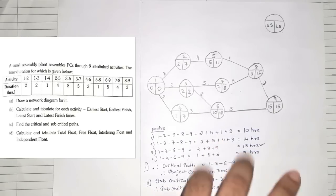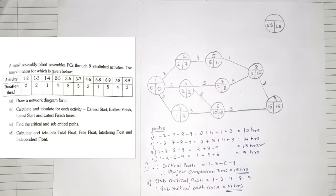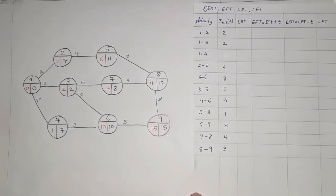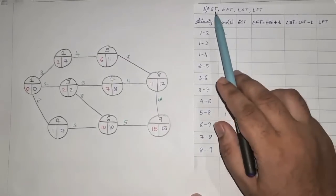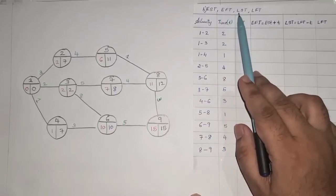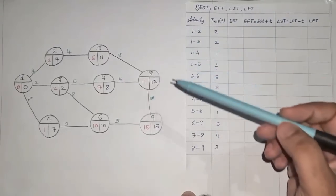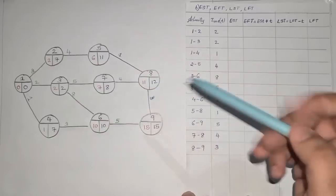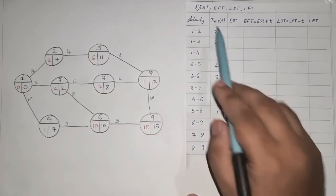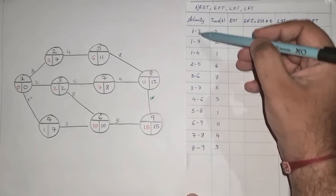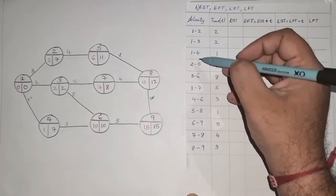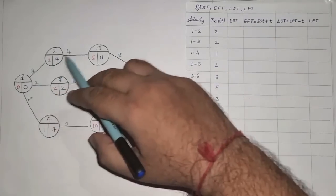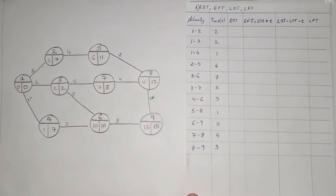Now we use these network values to fill a table for each activity. For earliest start time (EST), we look at the first value of the starting node of each activity. For activities starting at node 1: EST=0. For activity 2→5: EST=2. For activities from node 3: EST=2. For activity 4→6: EST=1. For activity 5→8: EST=6. For activity 3→6: EST=10 (from node 6 perspective, correction: EST=2 for activity 3→6 starting at node 3). For activity 7→8: EST=7. For activity 8→9: EST=11.